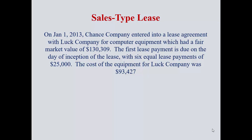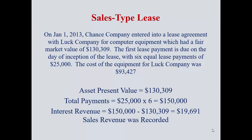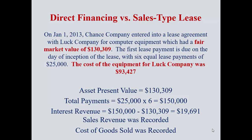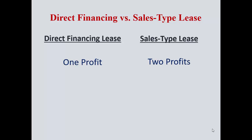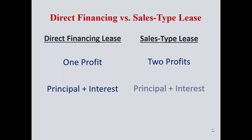Breaking down the numbers: sales revenue and cost of goods sold are both recorded because the fair market value of $133,309 is the initial lease principal, and the cost of the equipment to the lessor was less — so it is a sales type lease. The amortization table is identical with these payments since no other variables change. To summarize: a direct finance lease is one profit; a sales type lease is two profits — the initial gain on the sale, or gross profit, in addition to the interest earned on the lease. The key point is that a capital lease is identical to an installment note; it's just handled differently on your books.